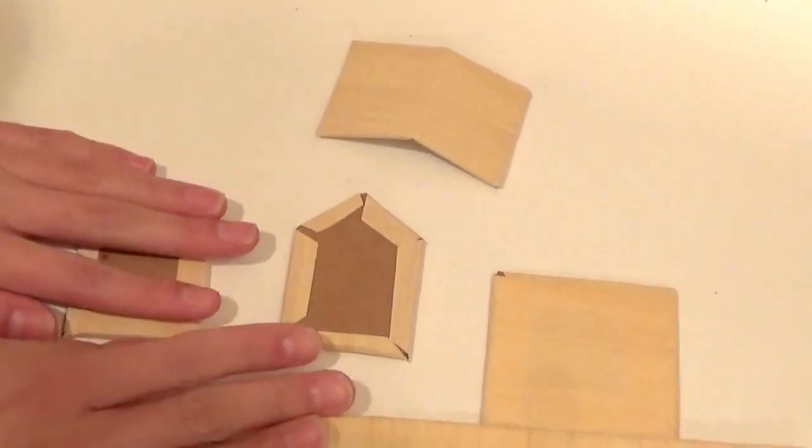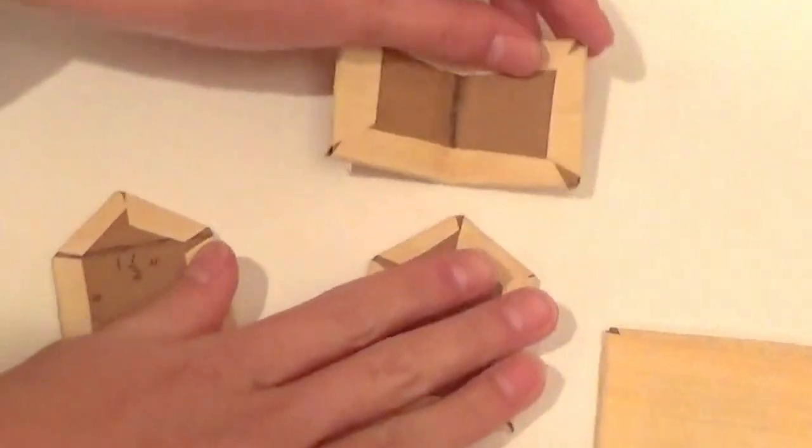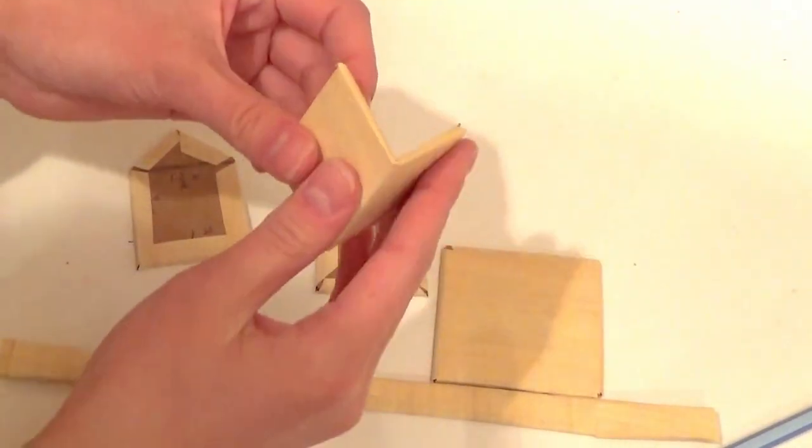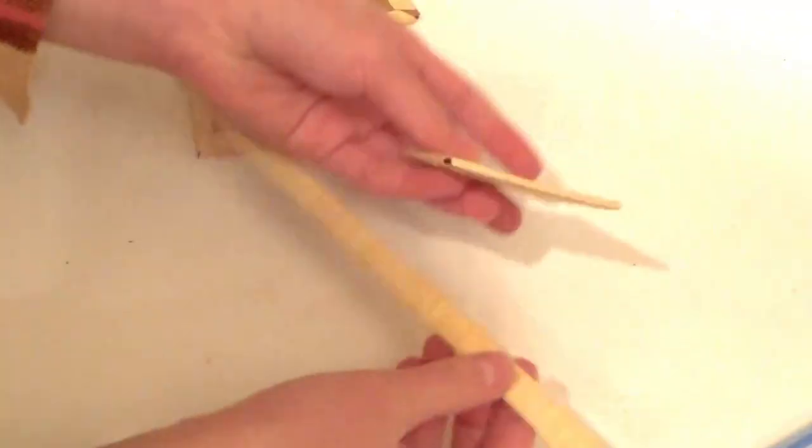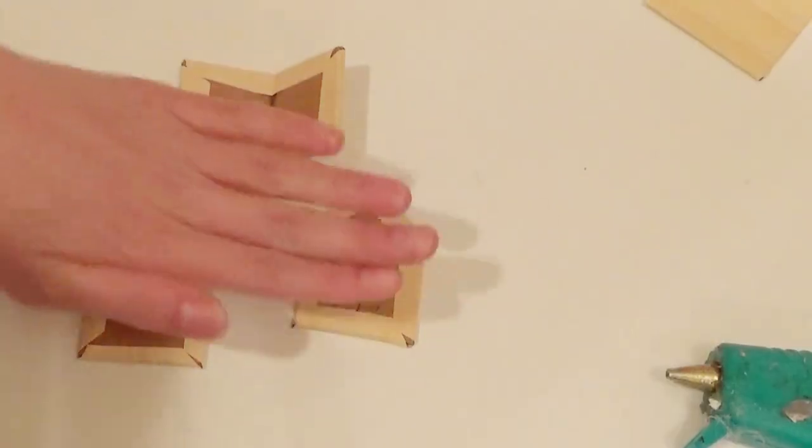Now you should have five pieces of cardboard. These three are only covered on one side, and you should bend this one in the middle. These two are covered on both sides. Now we're going to assemble our birdhouse.